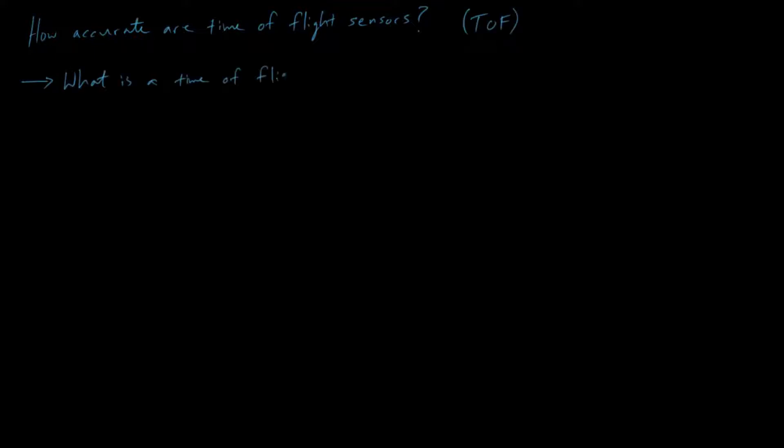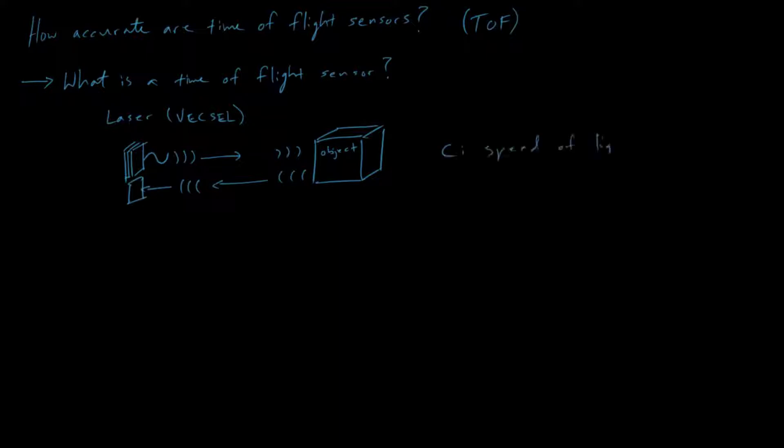So before I get into it, what is a time-of-flight sensor? A time-of-flight sensor uses a laser, typically a vexel, to create a signal. And the signal will propagate over to an object, and that object will reflect the signal back. And this will be received by a collector. So the way that that gives you the range or the distance to the object is using the speed of light.